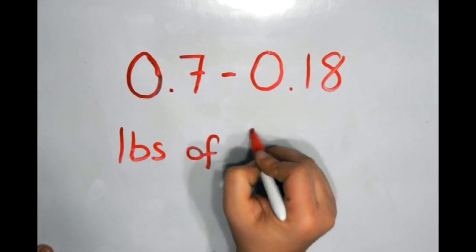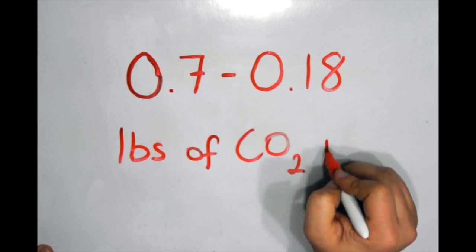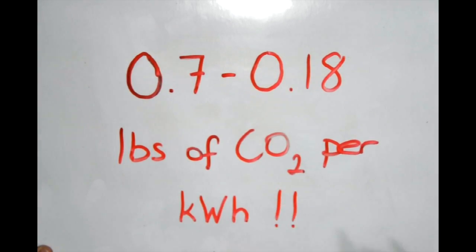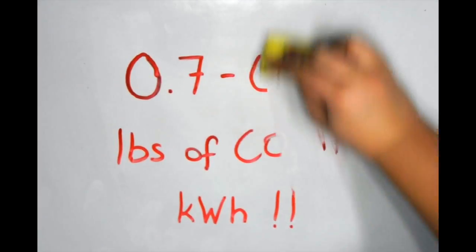Most estimates of life cycle solar panel emissions are between 0.07 and 0.18 pounds of carbon dioxide per kilowatt hour, which is far less than the life cycle emissions rates than both natural gas and coal.